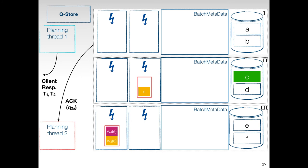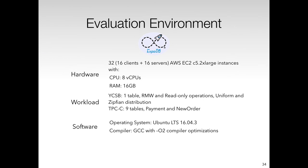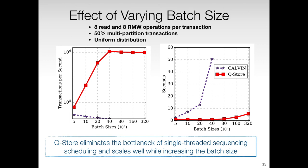Once all expected acknowledgments are received, the planning thread can respond to the clients who sent T1 and T2. We implemented QStore in ExpoDB, which also includes implementations of Calvin and other non-deterministic protocols used in our evaluation. We use a cluster of 32 virtual machine instances deployed on Amazon EC2, with workloads based on YCSB and TPCC. In this experiment, we looked at only protocols that use batching, which are Calvin and QStore. The takeaway is that QStore can eliminate the bottleneck of single-threaded sequencing and scheduling layers and scale well while increasing batch size. QStore achieves up to 22 times the throughput performance of Calvin and 95% lower latency on this workload.